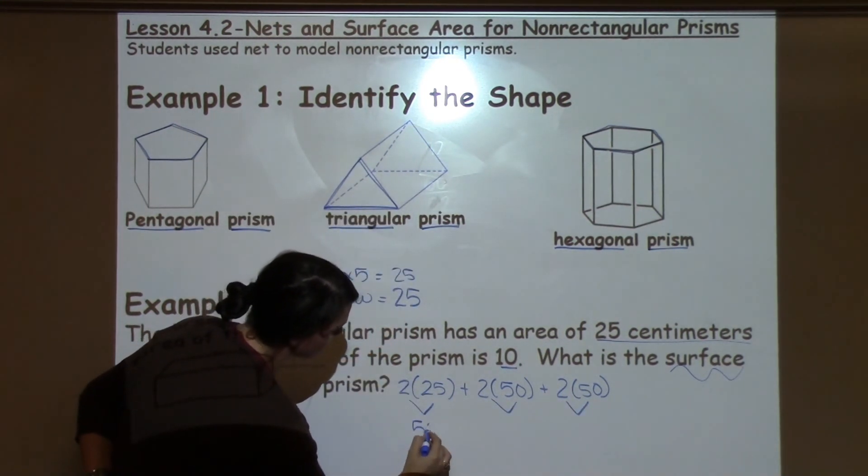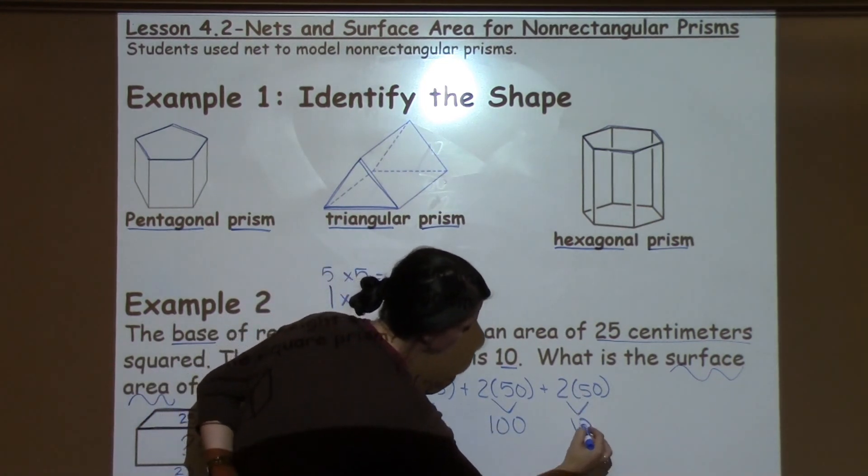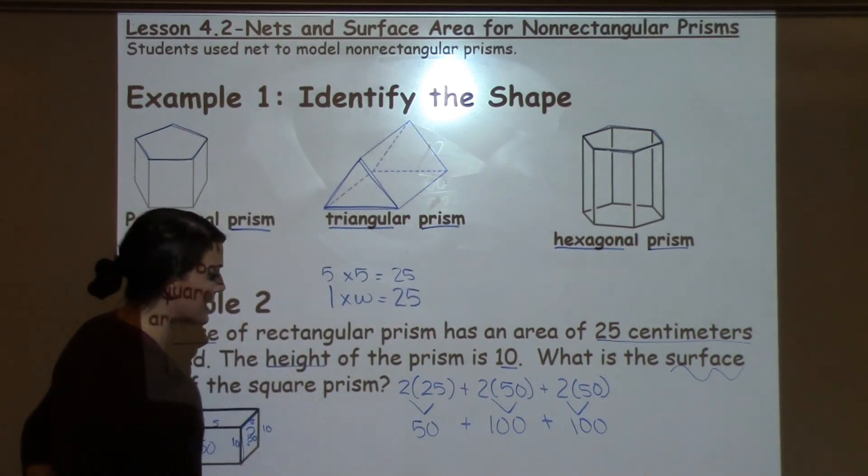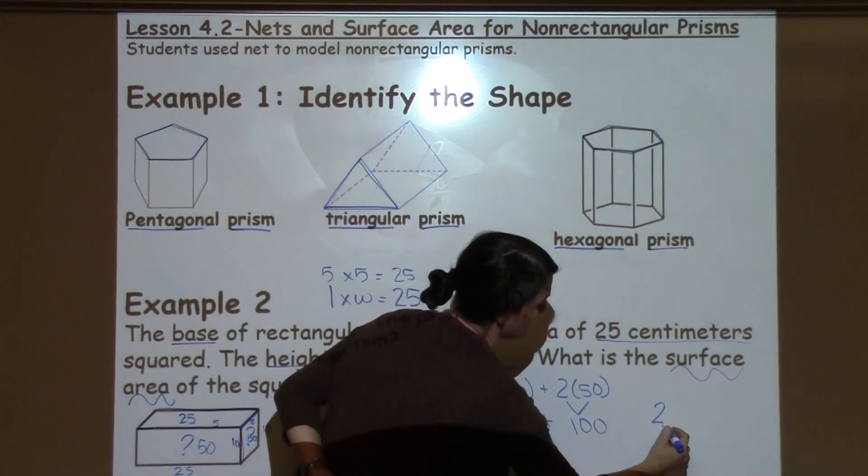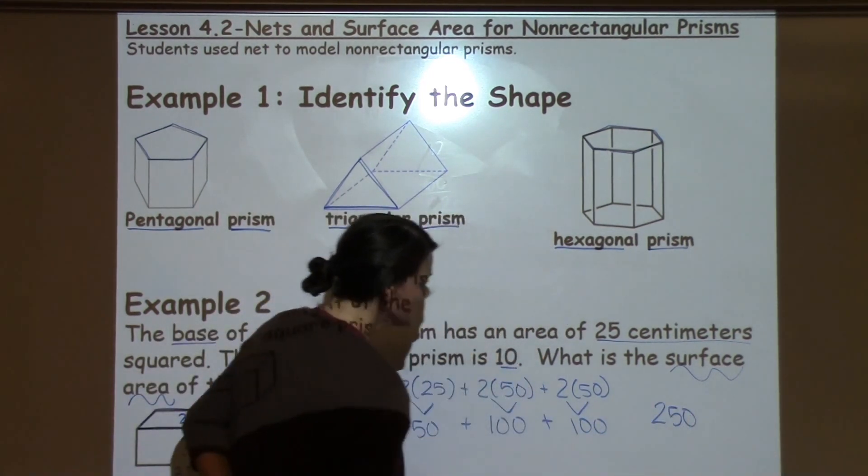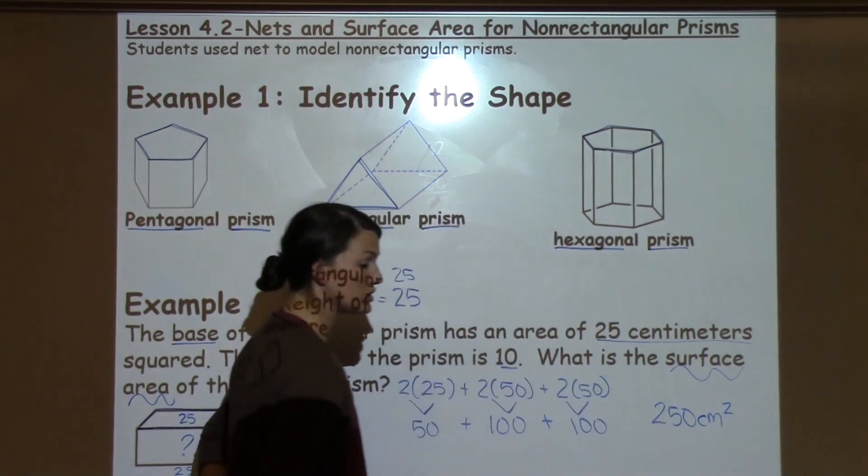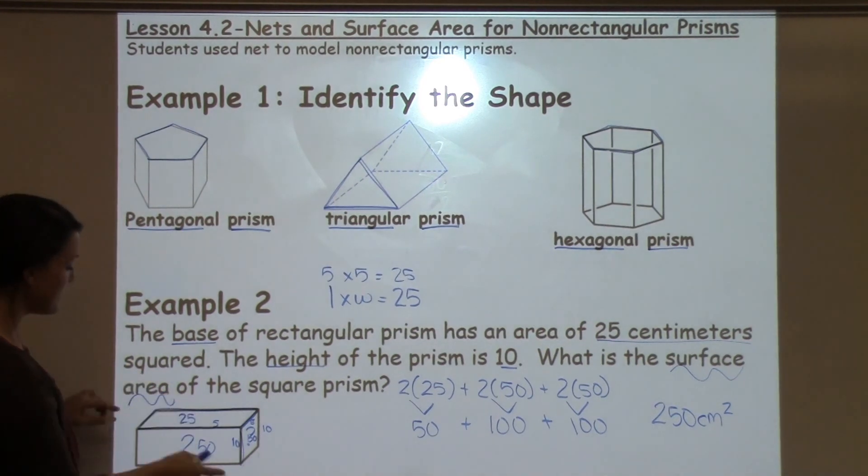So 2 times 25 would be 50. 2 times 50 would be 100. 2 times 50 would be 100 again. And then I just need to add up 100 plus 100 is 200 plus 50 is 250. Now I'm working with centimeters in this case. And because I'm finding surface area, I'm going to square my units.